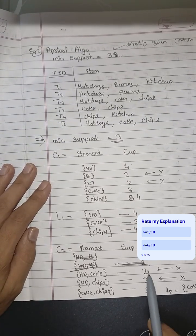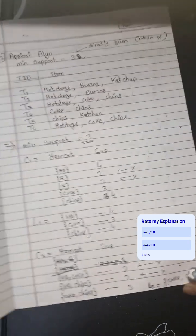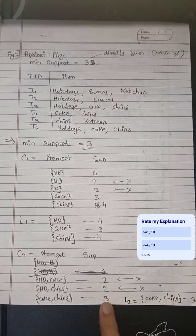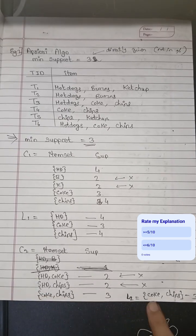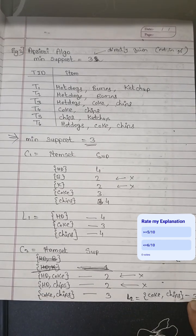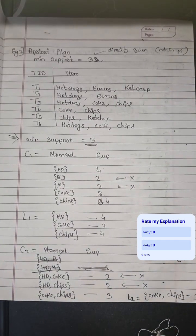So we reject 2 and 2. Because our minimum support is 3. So the new list is Coke and chips only, which is 3. Thank you. This ends our video. Thank you.